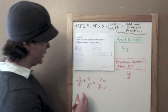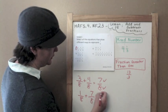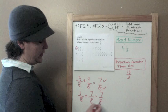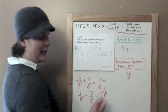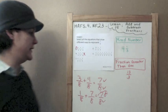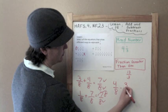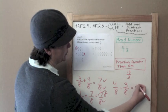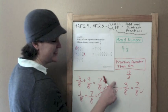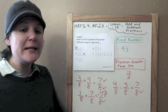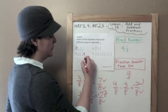Let's try B: one-eighth plus seven-eighths equals seven-eighths. Well, our eight is good, but one plus seven is eight — that gives eight-eighths, so B is not right. C says four-eighths minus three-eighths equals seven-eighths. Our eights look good, but four minus three is one — not seven. Wrong.